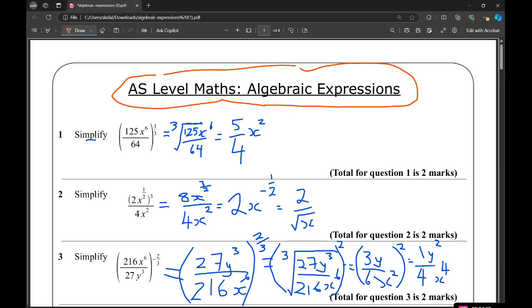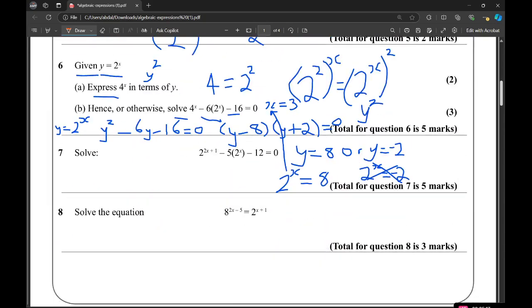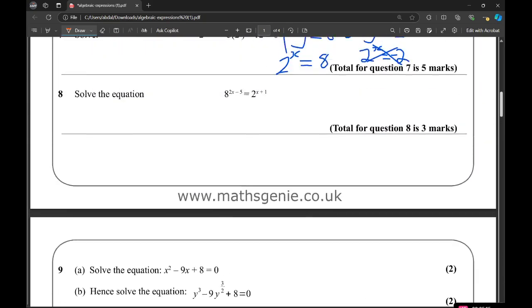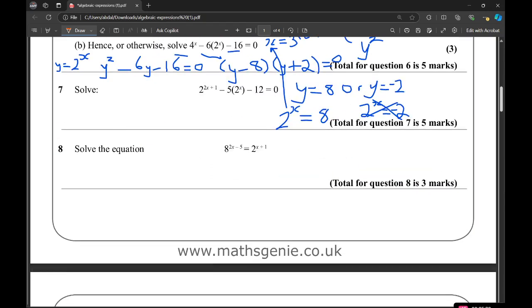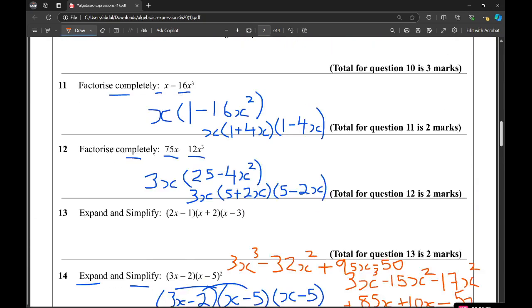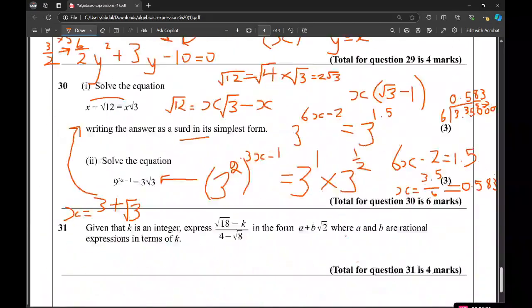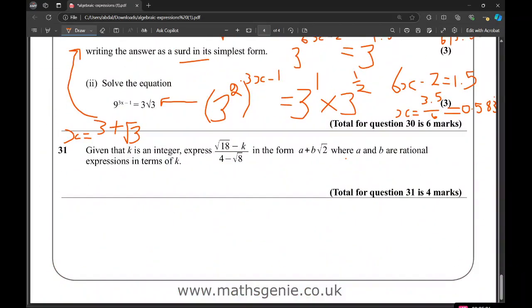But bits of it may be appropriate for GCSE. So AS Maths here is year 12 Maths, when you start A-level Maths. AS is like year 1, so year 12. And then A2 is year 13 Maths. So let's do question 31.